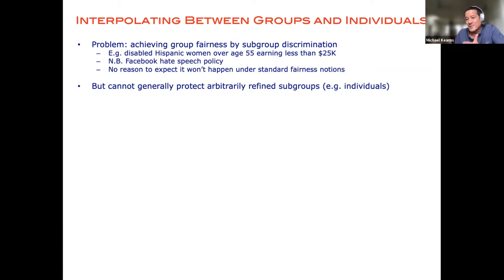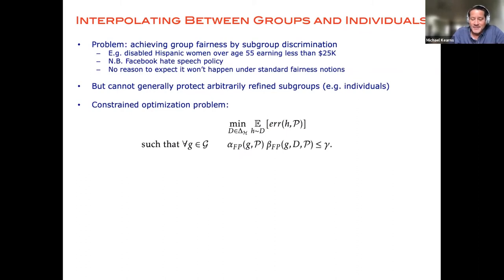So we can't, for instance, hope to provide strong fairness protections for groups that are so small in the general population that they're not even represented in our data set at all. And that basically comes out in the way that one writes down the constraints. Okay, so let me not, in the interest of time, try to slog through this but basically this is an objective of the type that I described: minimize some notion of error subject to group fairness constraints.